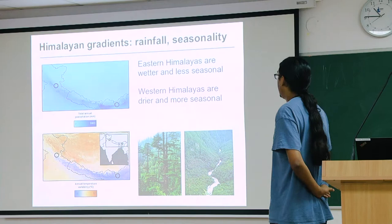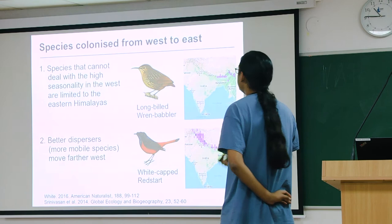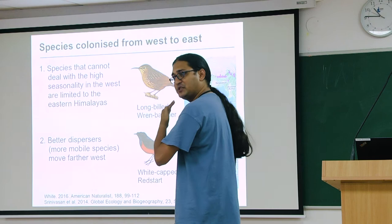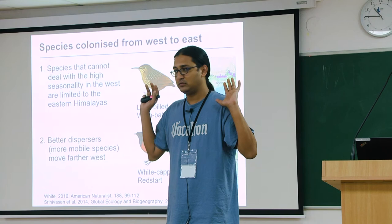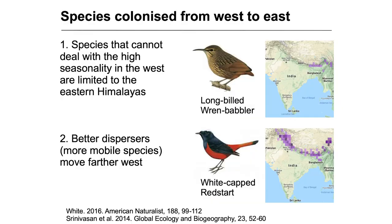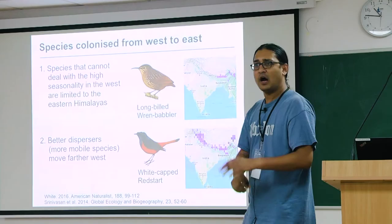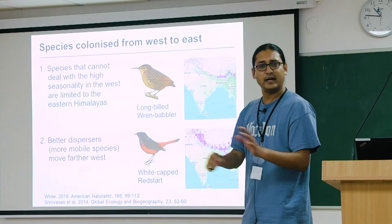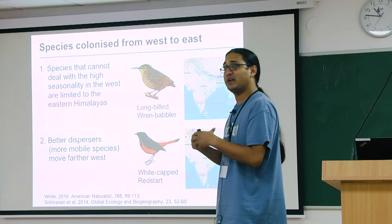Species that cannot deal with the high seasonality of the West, as they start moving West, reach a limit where the fluctuations in temperature are too much to deal with, and they go no further. These species are restricted to the East. You'll find species distributions where, presumably once they reach Nepal, the temperature fluctuation or dryness is too much, and they stop. Better dispersers — more mobile species, strong flyers — have been able to move further West, while species that are relatively poor dispersers, like the long-billed wren-babbler which hardly flies, are more restricted to the East.